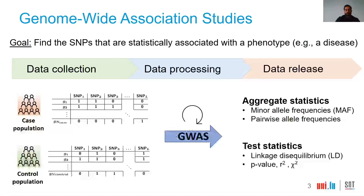We then process that data by computing statistics over it, and finally we release GWAS results. We have two types of GWAS results: we release aggregate statistics such as minor allele frequencies and pairwise allele frequencies, and we can also release test statistics such as linkage disequilibrium between SNPs, p-values, r-squares, and chi-squares, to show how strong the correlation is between a SNP and a phenotype.